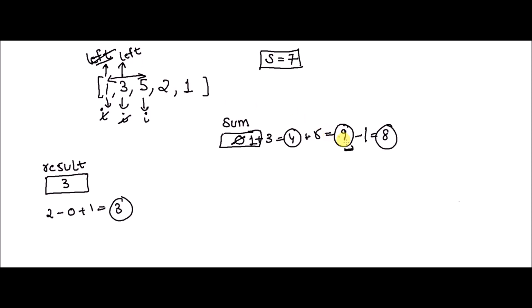Now 8 is still greater than 7, so 3 and 5 form another valid subarray. We go to the result variable again — right pointer is at index 2, left pointer is at index 1 plus 1 equals 2, so the length is 2, which is less than 3. We update the result. Since sum is still greater than s, we follow these two steps: if sum is greater than s, subtract the value pointed to by the left pointer and push left forward.